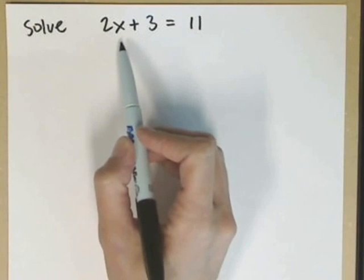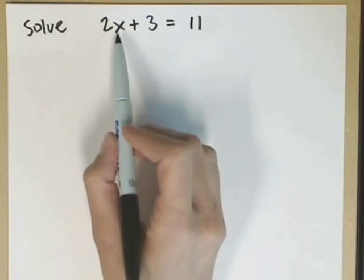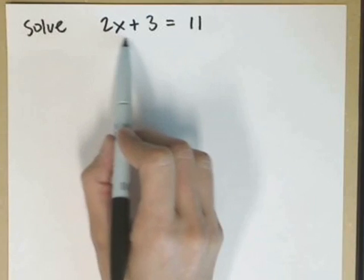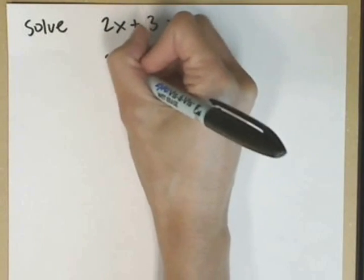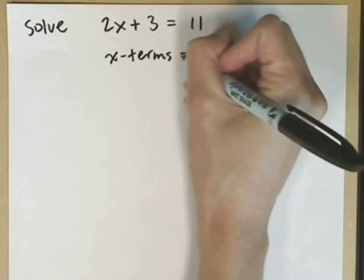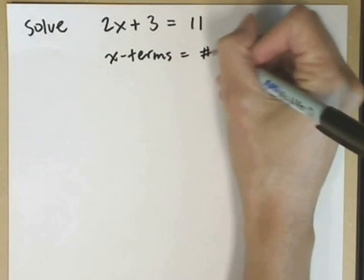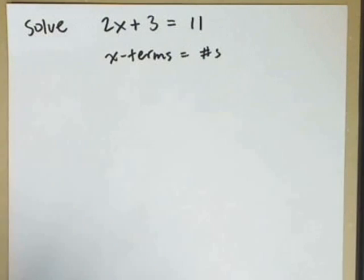When we're solving equations that have both a multiplication and a sum, our goal is to get our x terms on one side of the equation, and our constants, which would be our numbers, on the other side of the equation.